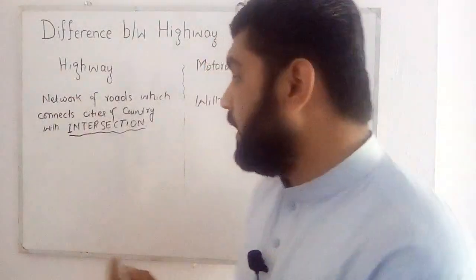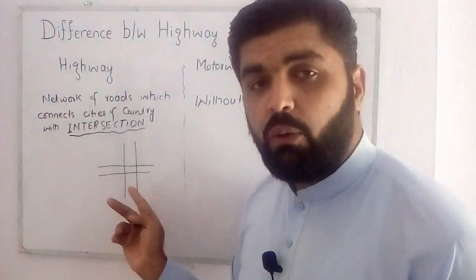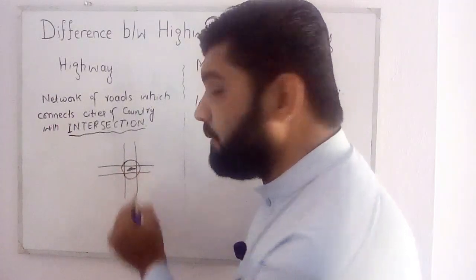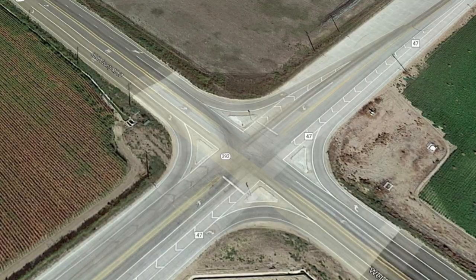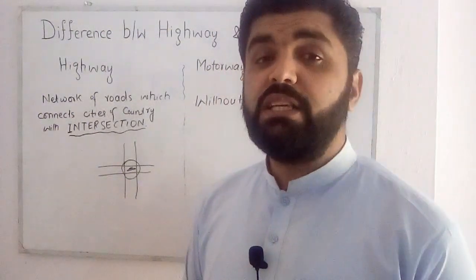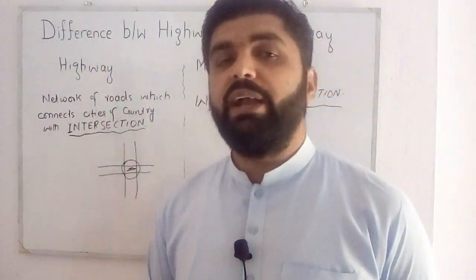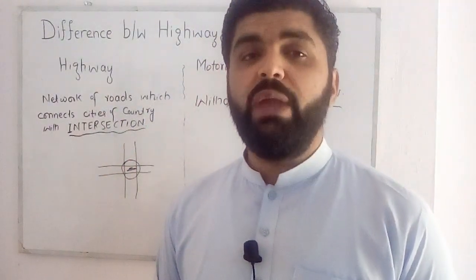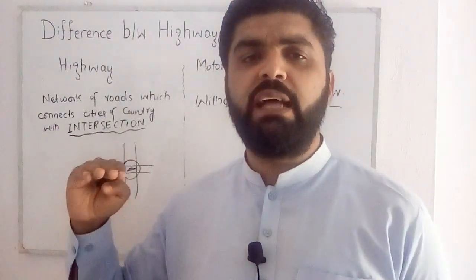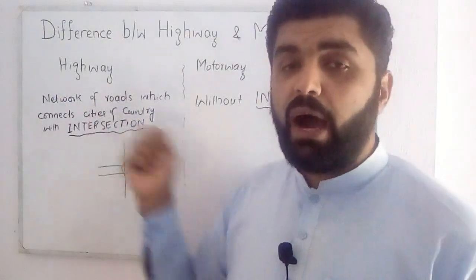What is an intersection? An intersection is when two roads cross each other at the same level. On highways, intersections are provided, while on motorways there is no direct intersection. Instead, an interchange is provided, where we can cross roads by grade separation — meaning the level of one road is lower than the level of another road. This is the first main difference between highway and motorway.